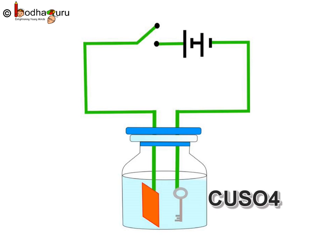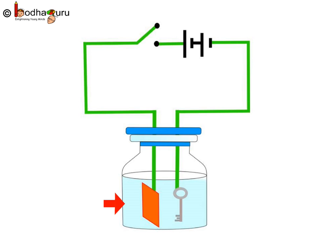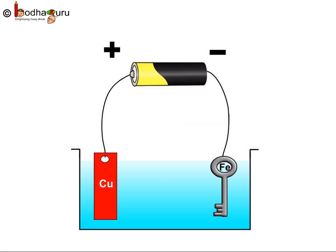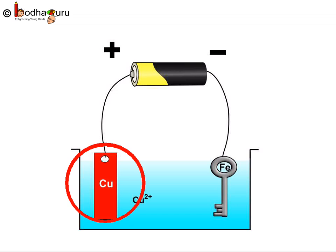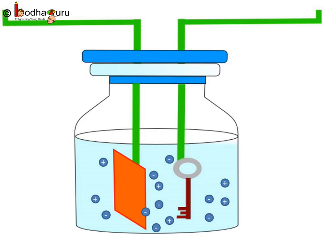Now, we connect the key to the battery using a wire, then put the key in the solution. Now, we connect the copper piece to the other end of the battery using a wire and put the copper piece in the solution. We can add a switch in the circuit instead of directly connecting the copper plate to the battery — that way we can stop the electricity flow anytime. After we start the electricity flow, copper gets deposited on the key and forms a shiny brown coating. You will also observe the copper plate starts to decay.